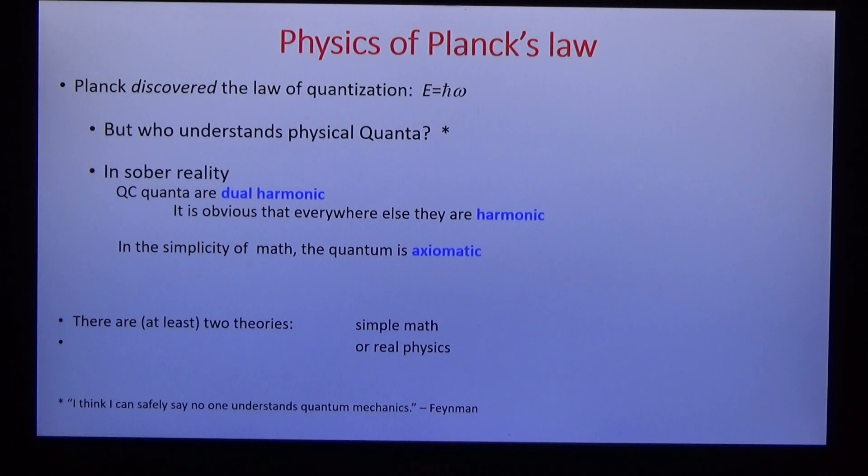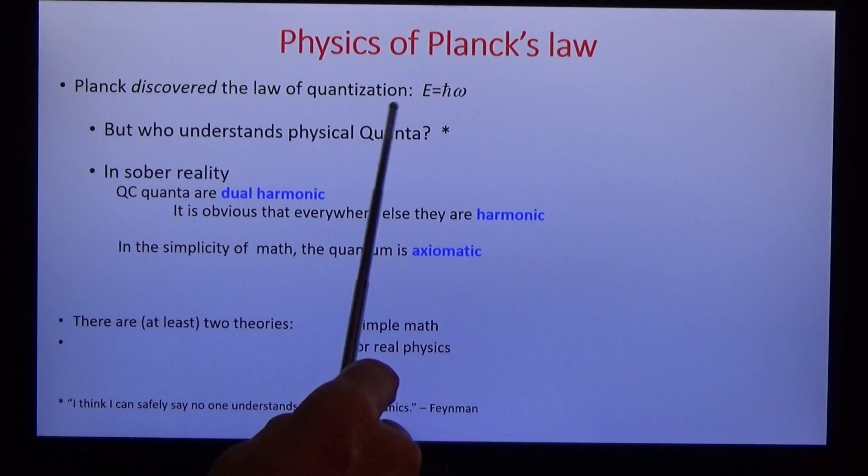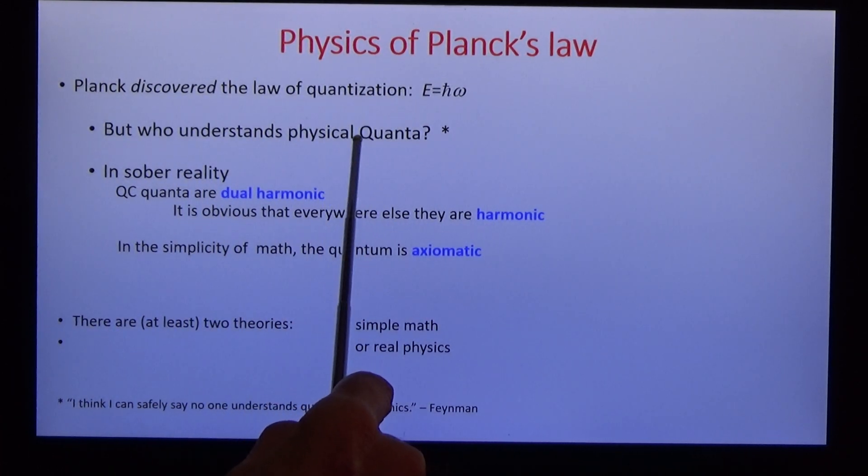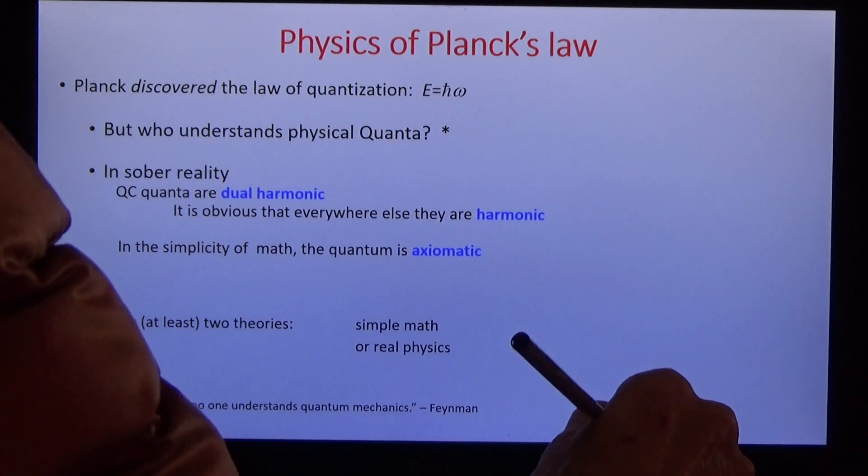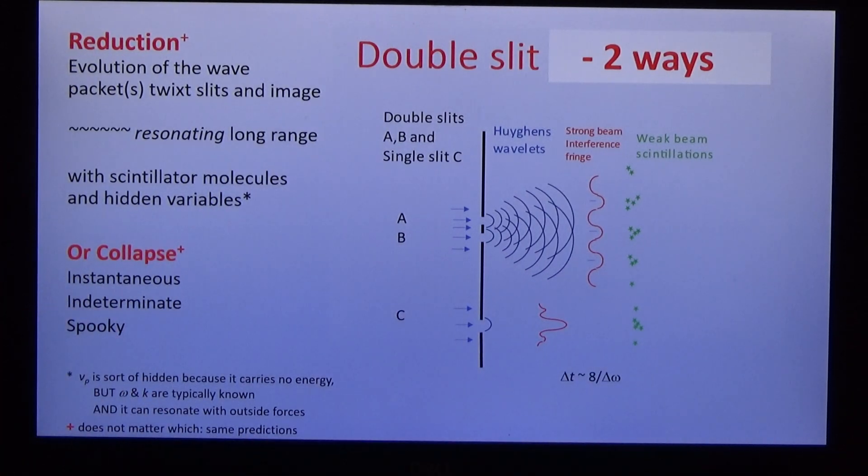With that we can re-examine the physics of Planck's law. Planck discovered the law of quantization, but who understands the quanta? Feynman observed, I think I can certainly say no one understands quantum mechanics and I disagree. In sober reality, quasi-crystal quanta are dual harmonic. It is obvious that everywhere else the quanta are harmonic. However, in the simplicity of math, the quantum is axiomatic. So let's compare the two theories, math and physics.